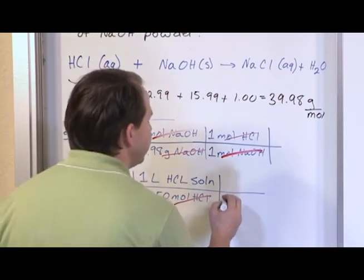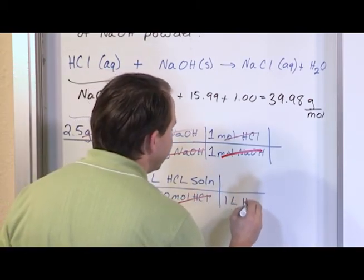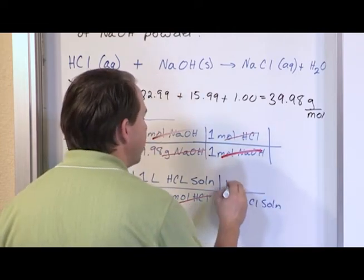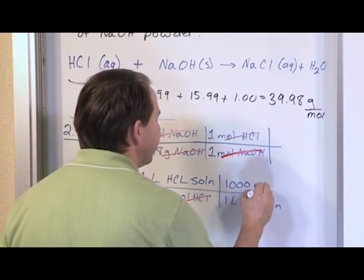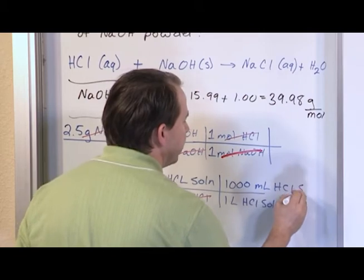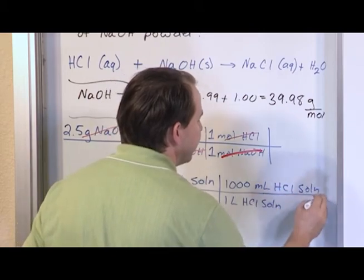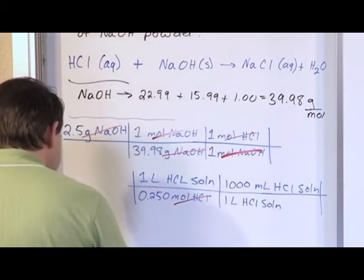So just take one extra minute to say that one liter of HCl solution is actually 1,000 milliliters of HCl solution. So you're basically using the metric system here to get to milliliters.